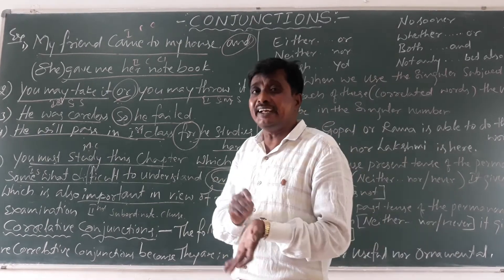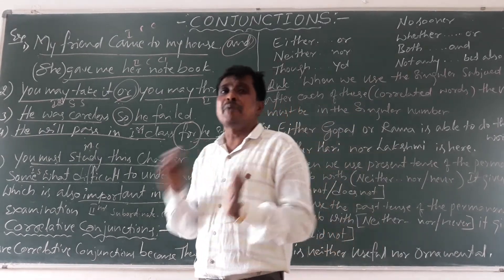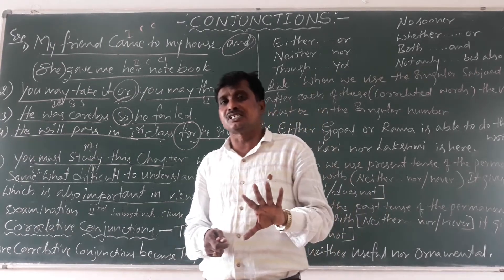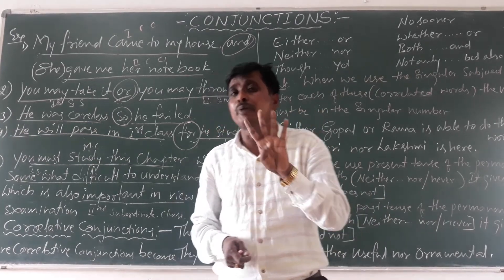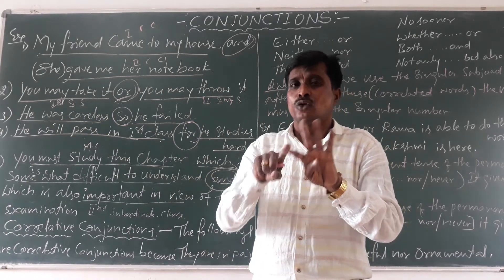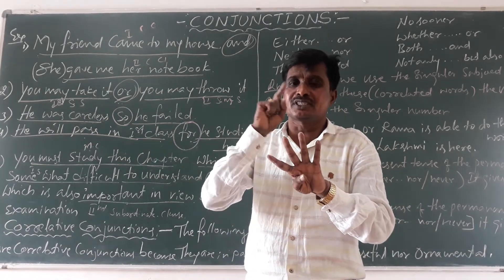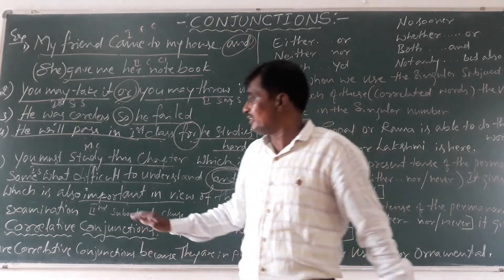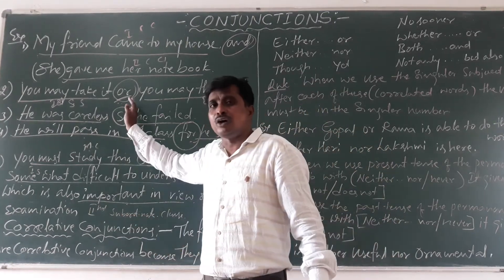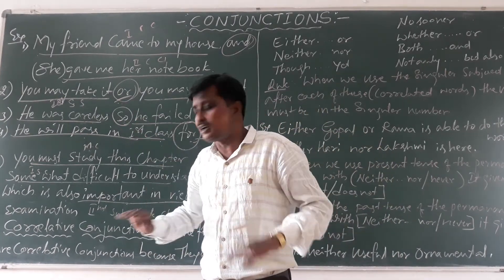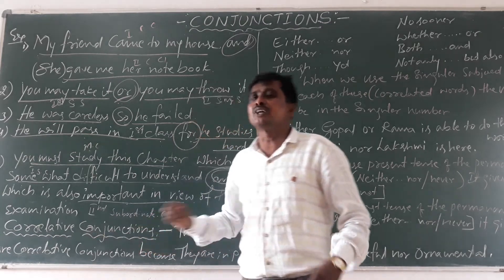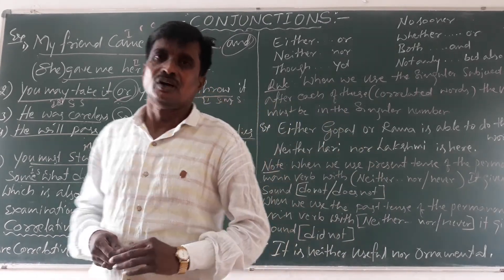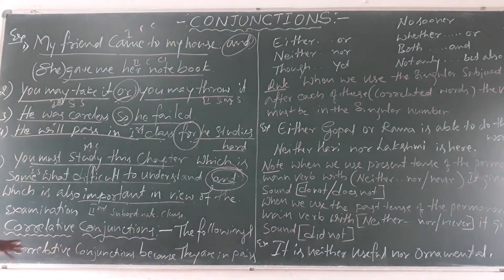Let us see the second main classification — that is correlative conjunctions. We have four main types of conjunctions: coordinate conjunctions, correlative conjunctions, subordinate conjunctions, and compound conjunctions. Now let us see what are correlative conjunctions.